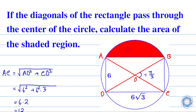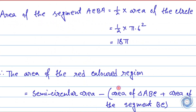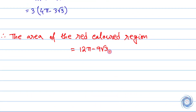Here we are supposed to find the area of this red colored region, and finally the area of this region is 12π minus 9 root 3 square units. We are done.